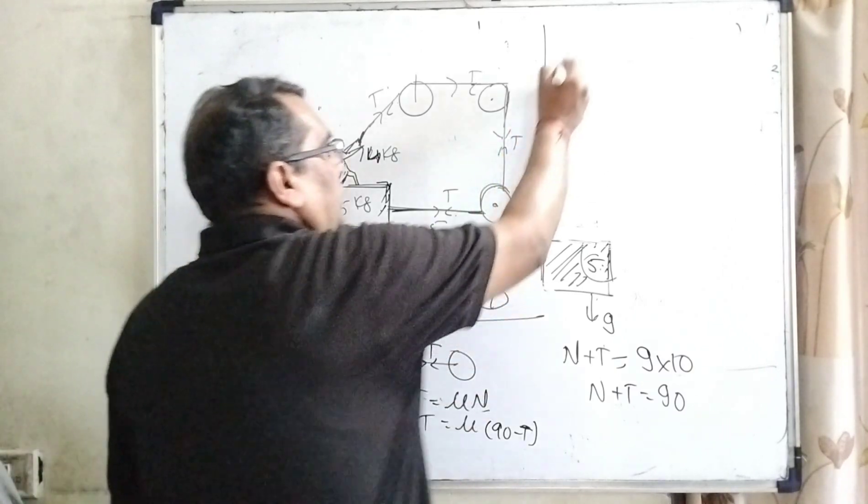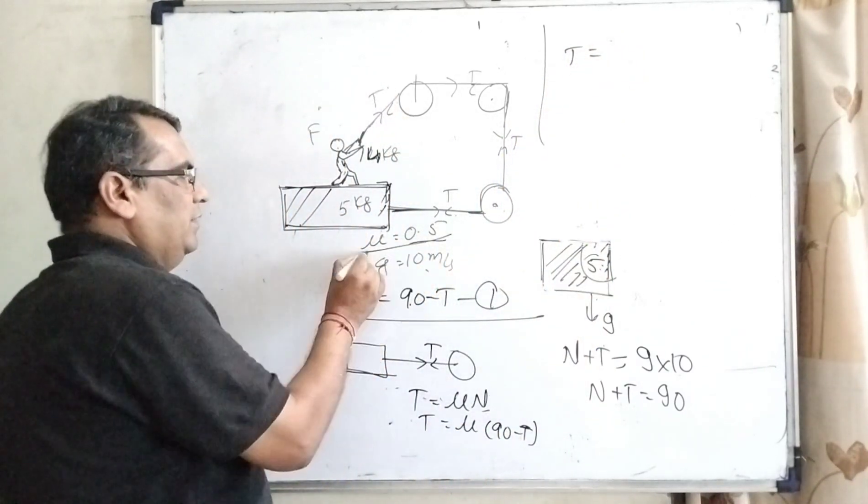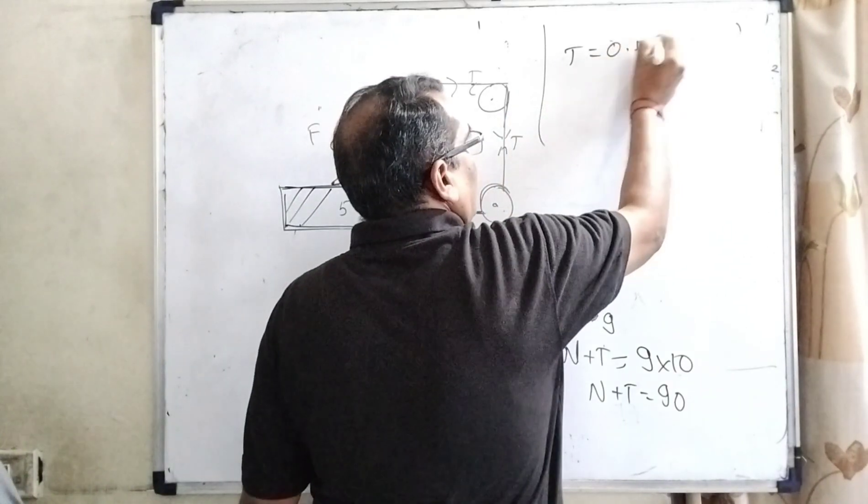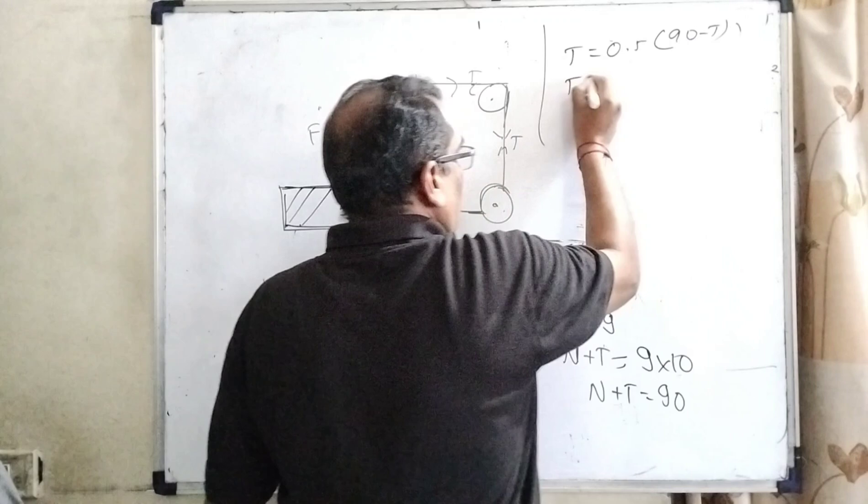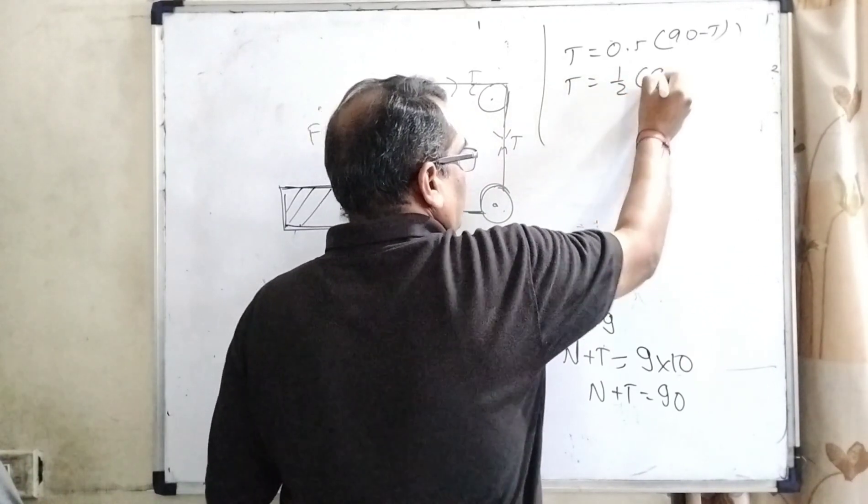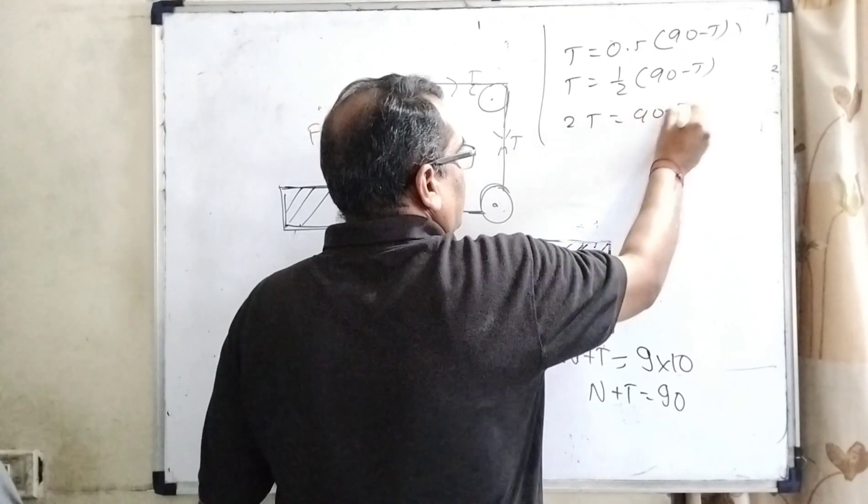Now substitute this value. T equal to, and what is the value of mu? Mu is equal to 0.5, and 90 minus T. 0.5 can be written as 1 by 2. So 2T equal to 90 minus T.